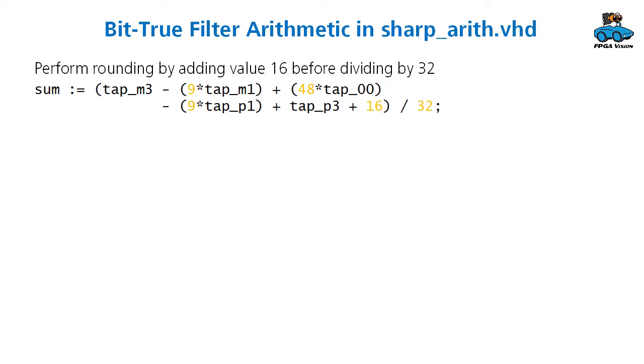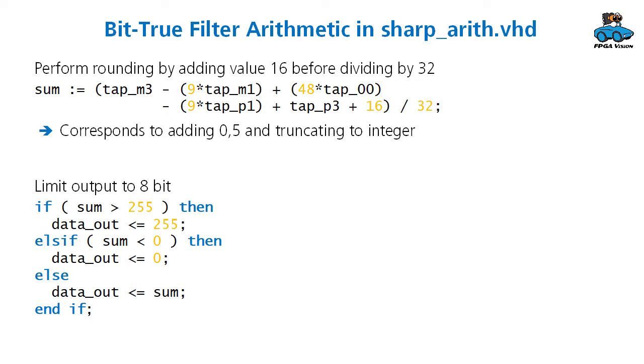Also, the VHDL code has to have the same bit true representation of the algorithm. And this is considered in the filter arithmetic in the module sharp_arith.vhd. One thing is that we have to perform the same rounding as Octave. And we do this by adding the value 16 and then dividing by 32. And the output of the arithmetic is limited to a byte. And we do this by limiting overflow and underflow to the values 255 and 0.